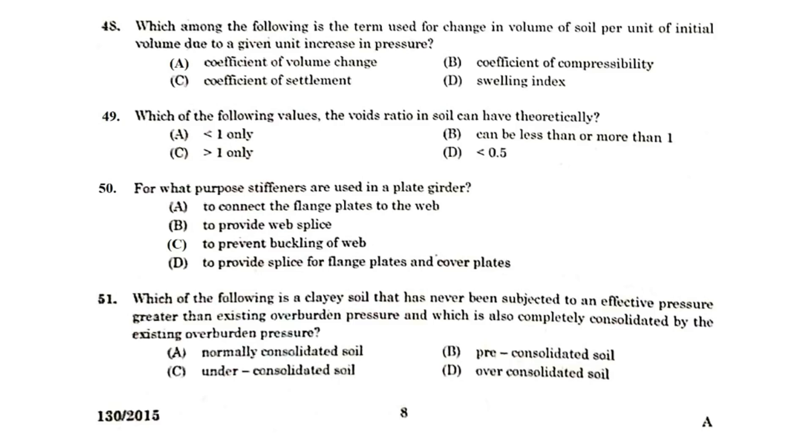Which among the following is the term used for change in volume of soil per unit of initial volume due to the given unit increase in pressure? Coefficient of volume change. Which of the following values the void ratio in soil can have theoretically? Can be less than or more than one. For what purpose stiffeners are used in plate girders? To prevent the buckling of web.